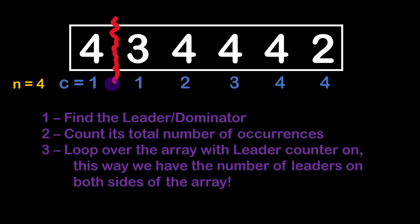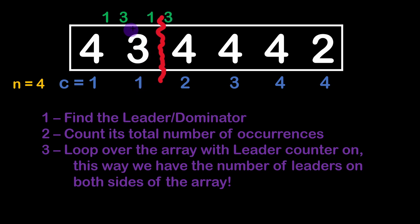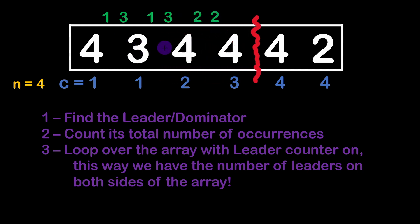By looping and tracking this counter, we can determine the number of occurrences of the dominator on both the left and right sides of the array at any moment during iteration. For example, at a given iteration, the left-side occurrences are held in variable c, and the right-side occurrences are given by n minus c — so four minus one gives us the right-side count.